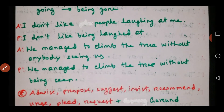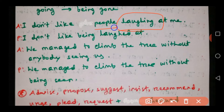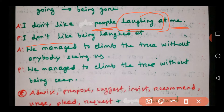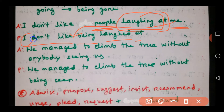Let's look at some examples. First, look at: 'I don't like people laughing at me.' Here 'laughing at' is our gerund. 'People' is the subject of the gerund and 'me' is the object of the gerund. We will not change 'I don't like' — this part remains the same. Then we change the gerund: 'laughing at' will become 'being laughed at'.